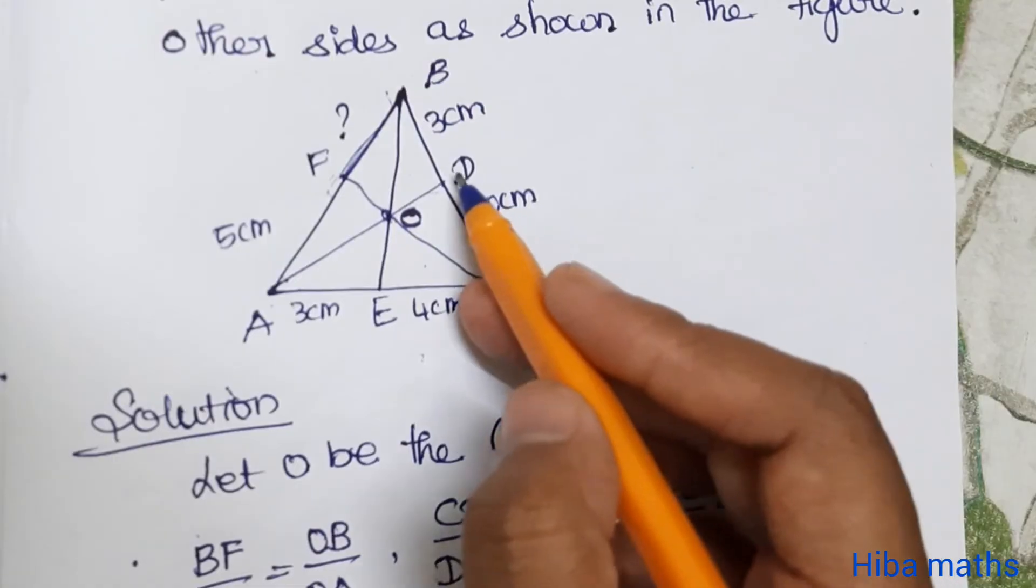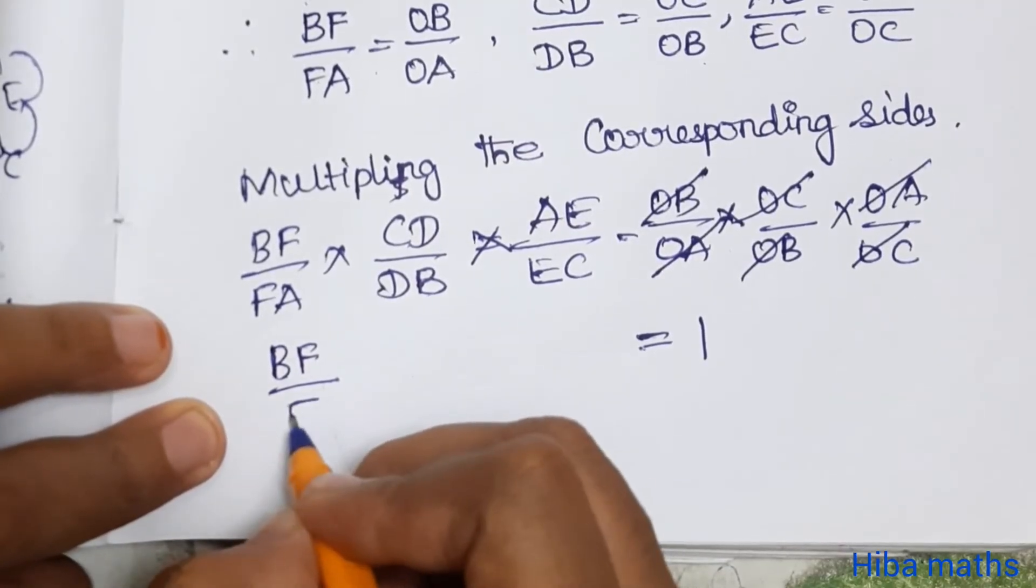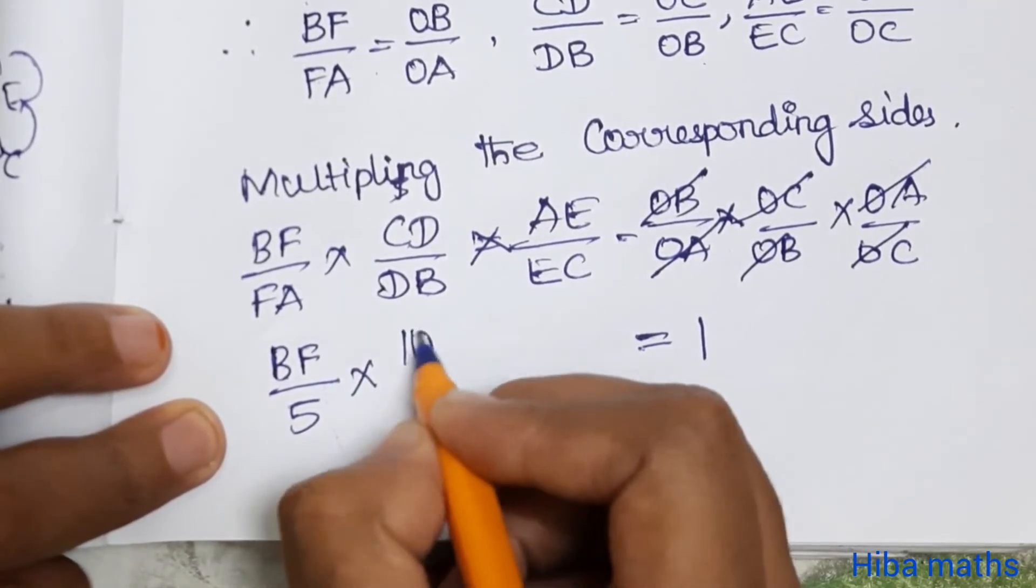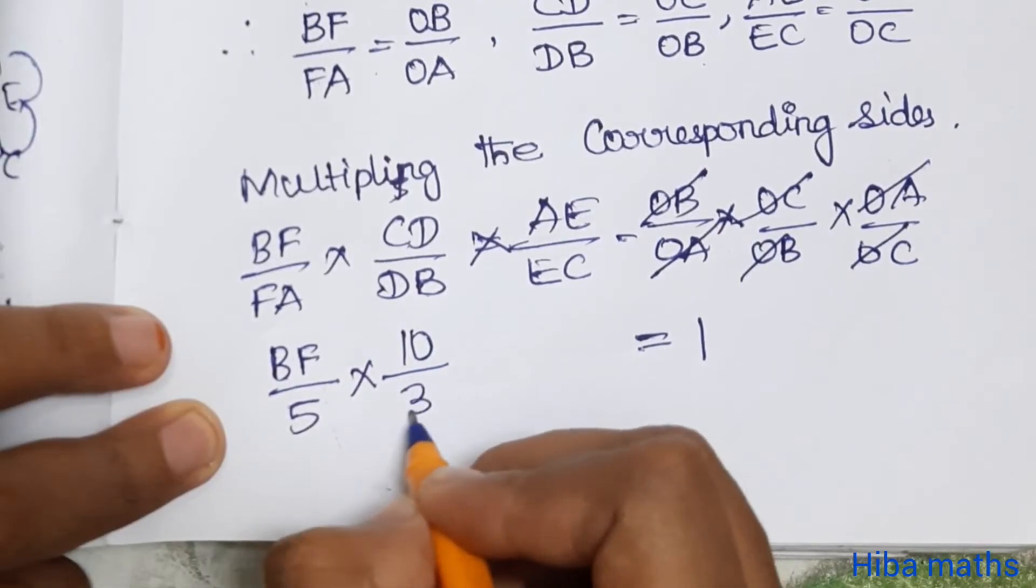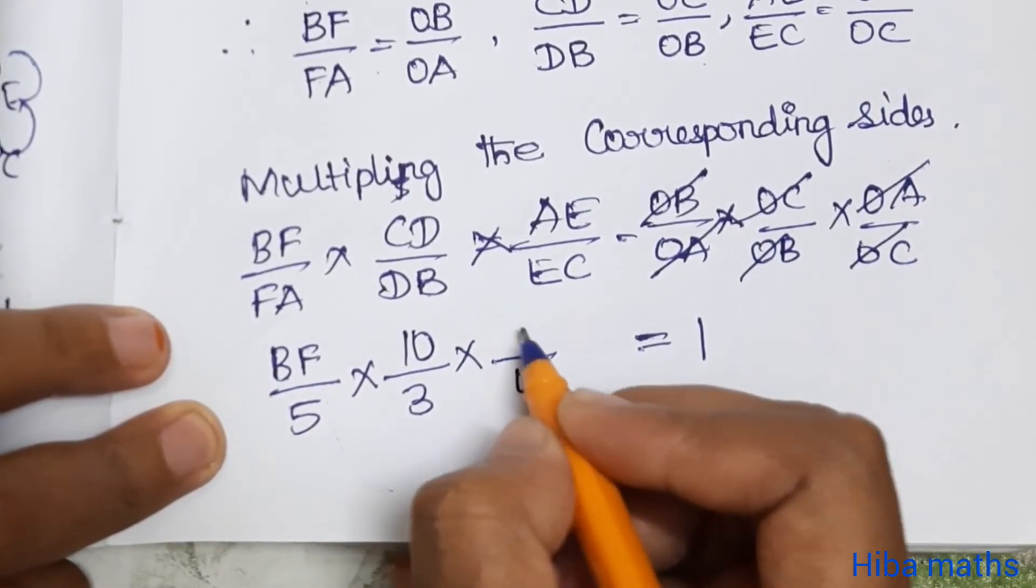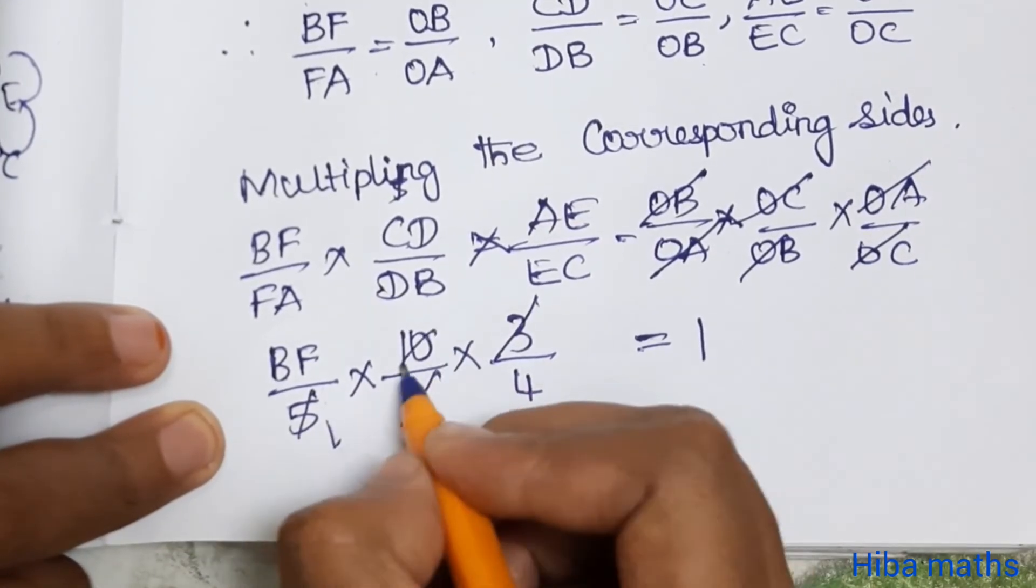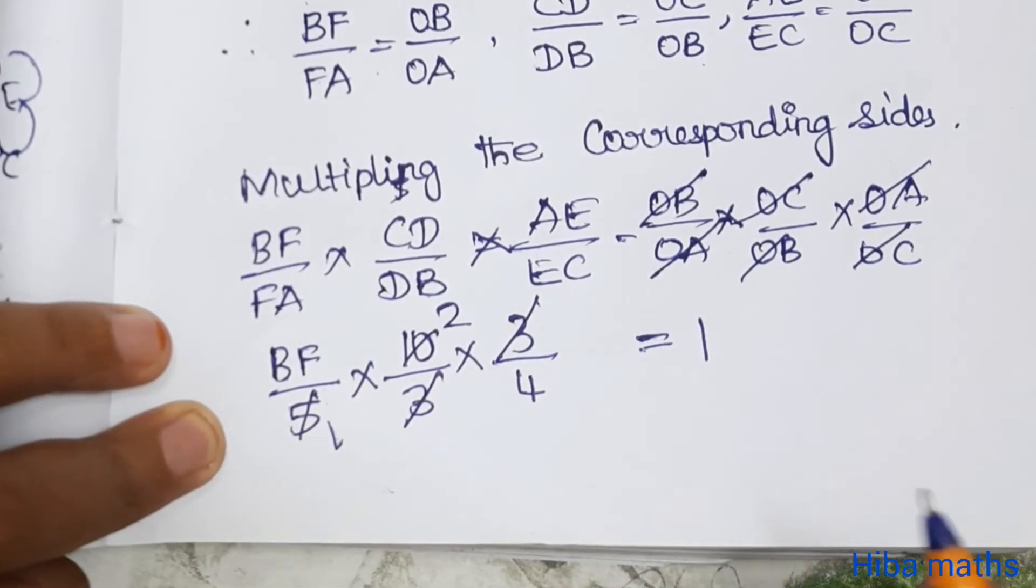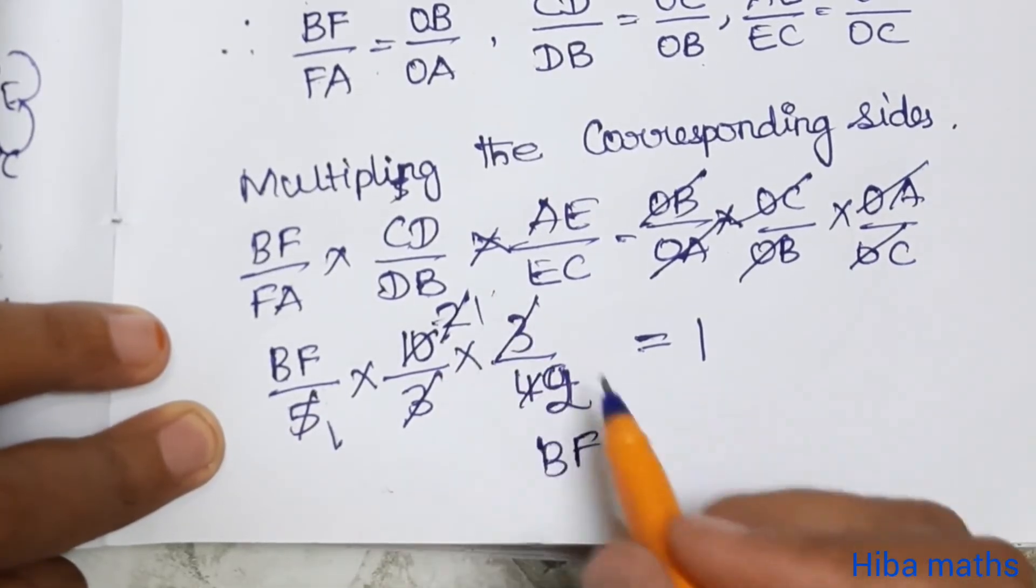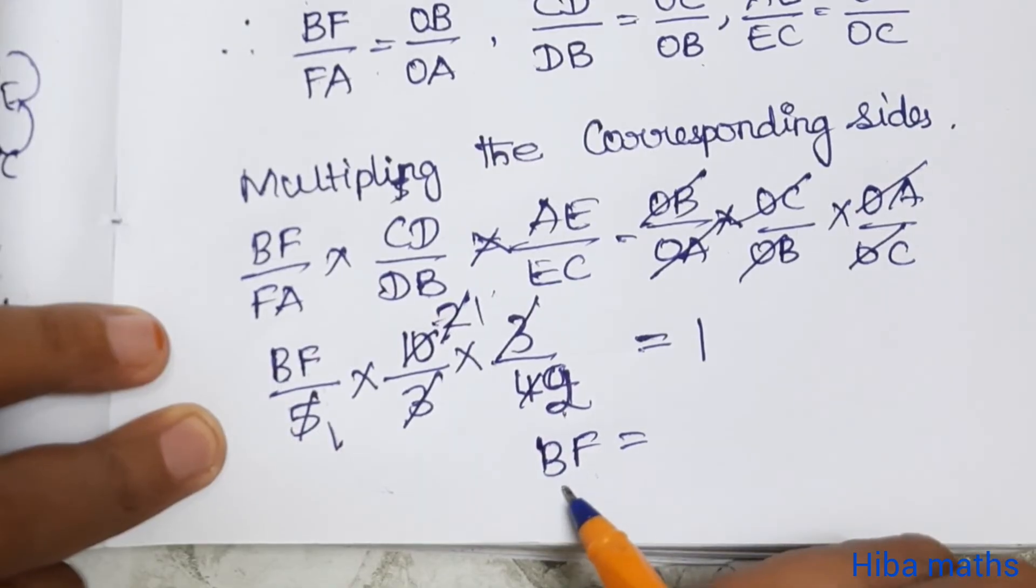So BF by FA times CD by DB times AE by EC equals 1. Substituting all the values: BF is unknown, FA equals 5, CD equals 10, DB equals 3, AE equals 4, EC equals 3. So BF by 5 times 10 by 3 times 4 by 3. Simplifying: 3s cancel, 5 and 10 give us 2, so BF by 2 equals 4. Therefore BF equals 2 cm.